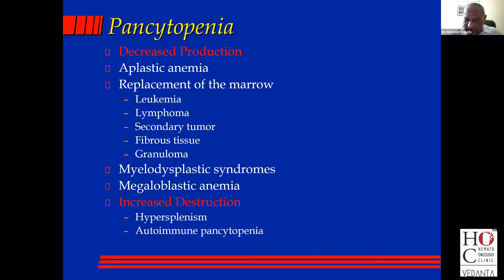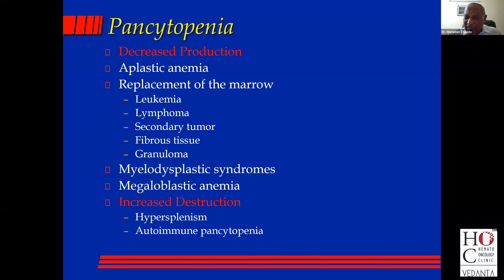Next: the bone marrow is full of cells but they're not working — myelodysplastic syndrome. Next: bone marrow again chock-a-block full of cells but there's pancytopenia — megaloblastic anemia. Two rare causes of pancytopenia are peripheral destruction due to hypersplenism, or rarely an autoimmune pancytopenia. So this is how you approach a pancytopenia.